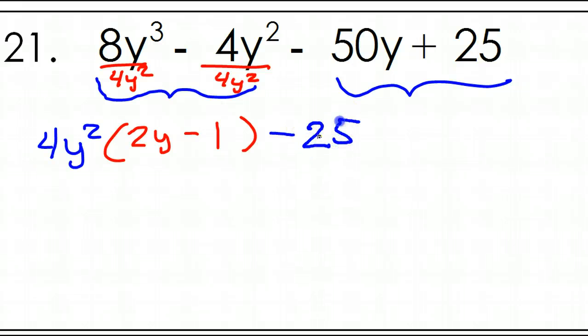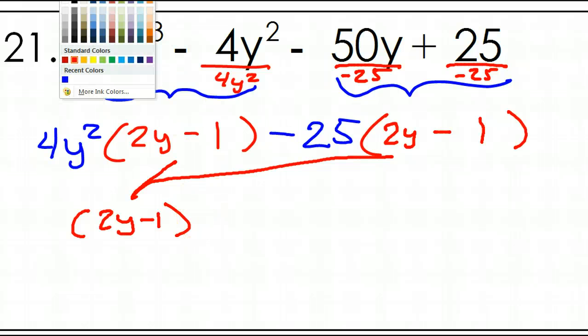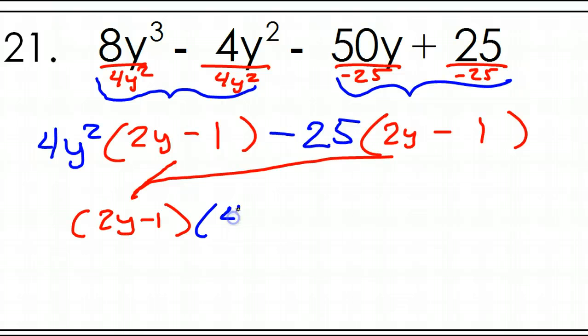Now, the parentheses. So, be super careful. If I divide both of these by 25. I'm sorry. I'm dividing both of these by negative 25, like I said. So, I'm going to have 2y and then minus one. The sign changes. And luckily, because we really need these to be the same. So, this red, the parentheses, are a common factor. So, I'm going to pull out the common factor out front. So, I will have 2y minus one. I've pulled it out. So, that leaves the blue stuff behind. So, that's 4y squared minus 25.